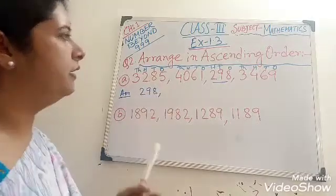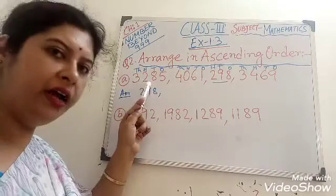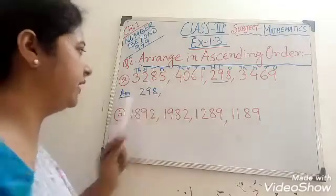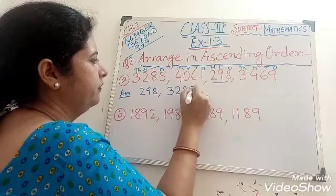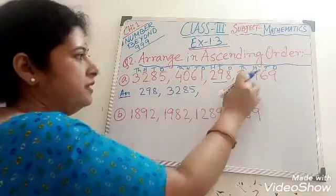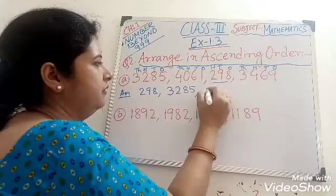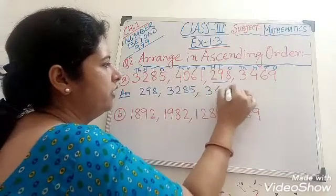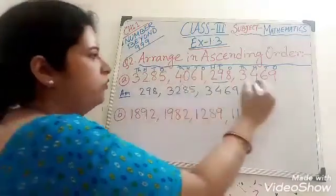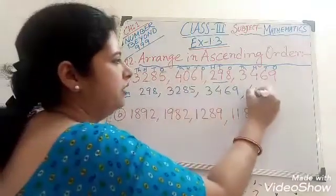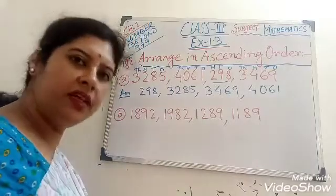Next, the next bigger number is 3,285. Then 3,469. And the last bigger number is 4,061. Clear children?